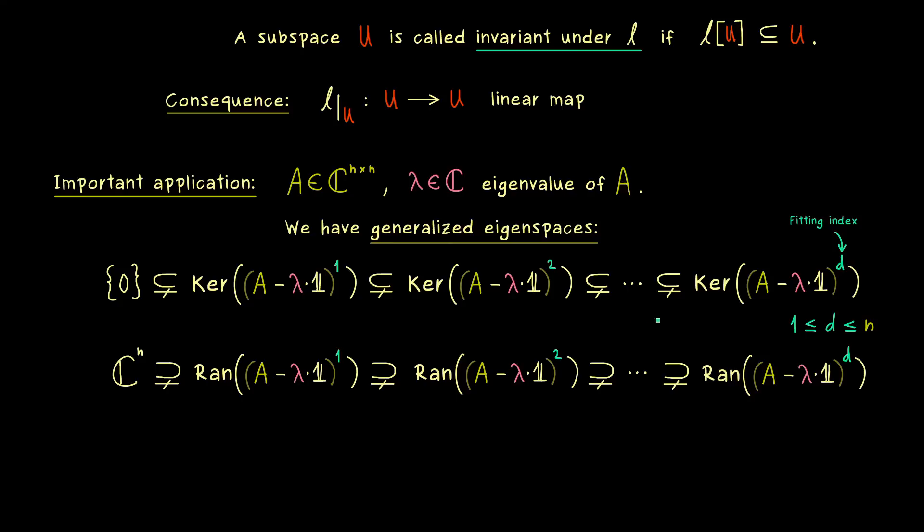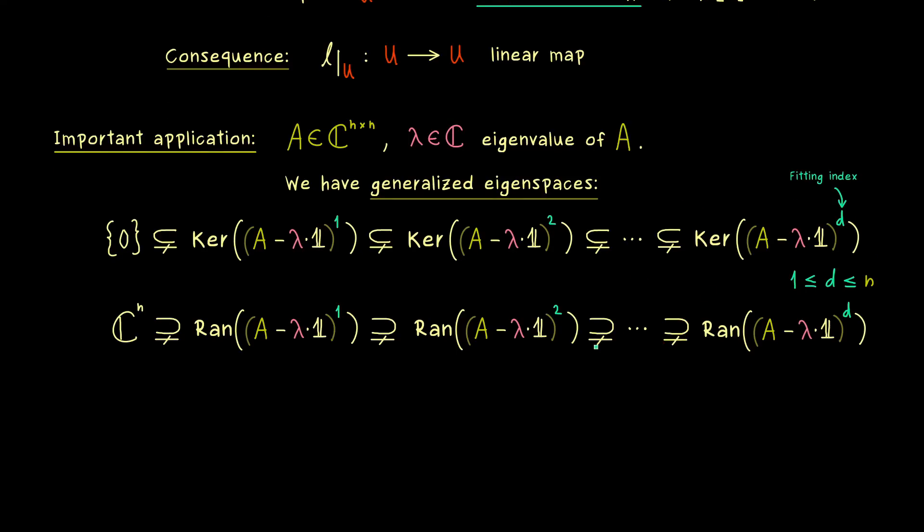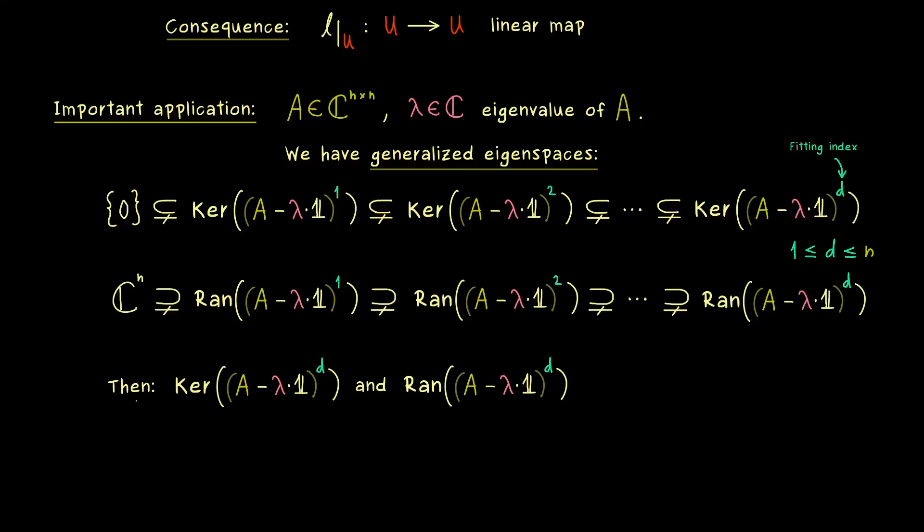Otherwise, it looks exactly the same, and we end at our fitting index d. And now the important thing is that these two subspaces at the end should be invariant under our matrix A. And in fact, it's not so hard to prove at all. So we just have to show if we apply our matrix A to the given subspace, we stay in this subspace.